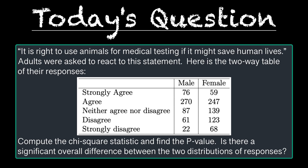The question we're working on today is: 'It is right to use animals for medical testing if it might save human lives.' Adults were asked to react to this statement. Here is the two-way table of their responses. Compute the chi-square statistic and find the p-value. Is there a significant overall difference between the two distributions of responses?